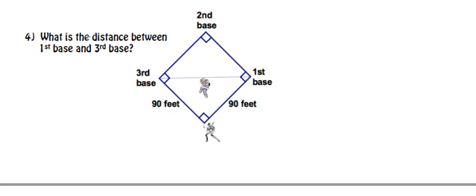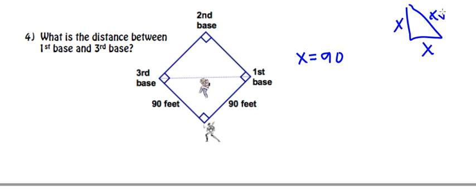It wants to know the distance between first base and third base. We're looking at a 45-45-90 because we have an isosceles right triangle. Our x value is 90, and in a 45-45-90 we get x, x, and x√2. So the hypotenuse — the distance between first and third base — is just x√2 = 90√2.